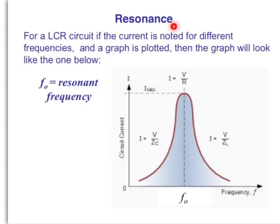Resonance. For a LCR circuit, if the current is noted for different frequencies, a graph is plotted. Then the graph will look like the one below, like this one here. There will be a point where the current is really huge, and the corresponding frequency is called the resonant frequency.